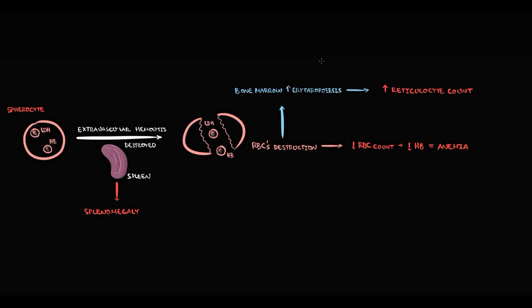To produce new cells we need DNA, and to produce DNA we require a lot of folic acid. So overactive erythropoiesis will, with time, cause depletion of folic acid, and folate deficiency will develop.